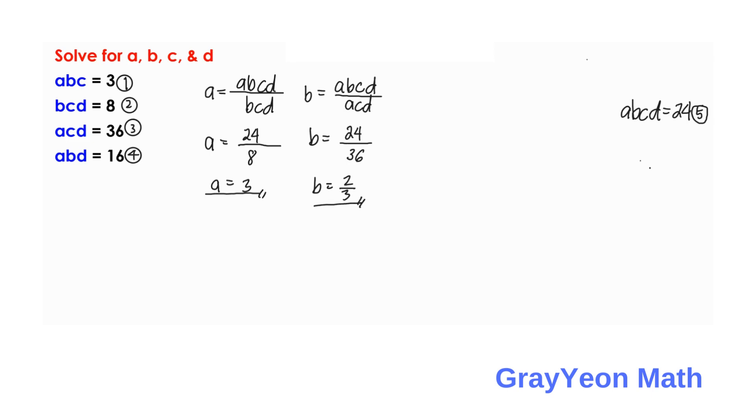And for c, is equal to abcd divided by abd. And that is equation 4. So, c is equal to 24 divided by abd, which is 16. If we divide this by 8, then this becomes 3. Divide by 8, so this becomes 2. So, c is equal to 3 over 2.